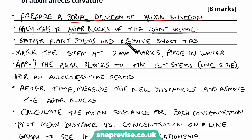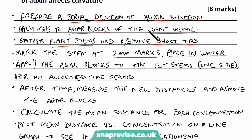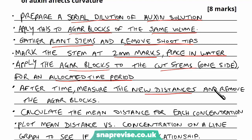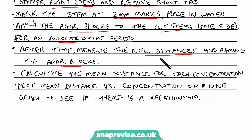Once that's prepared, we should prepare the other materials we need. We've got the agar and the auxin ready, but we don't have the plants ready. So the next thing logically is to gather the plant stems and remove the shoot tips — you could say remove that with scissors or whatever. Then mark the stem at 2mm marks and place them in water. Now that all materials are ready, apply the agar blocks to the cut stems for an allocated time period, administering them to the stems at the same time, and start the timer. After the time has passed, measure the new distances and remove the agar blocks.